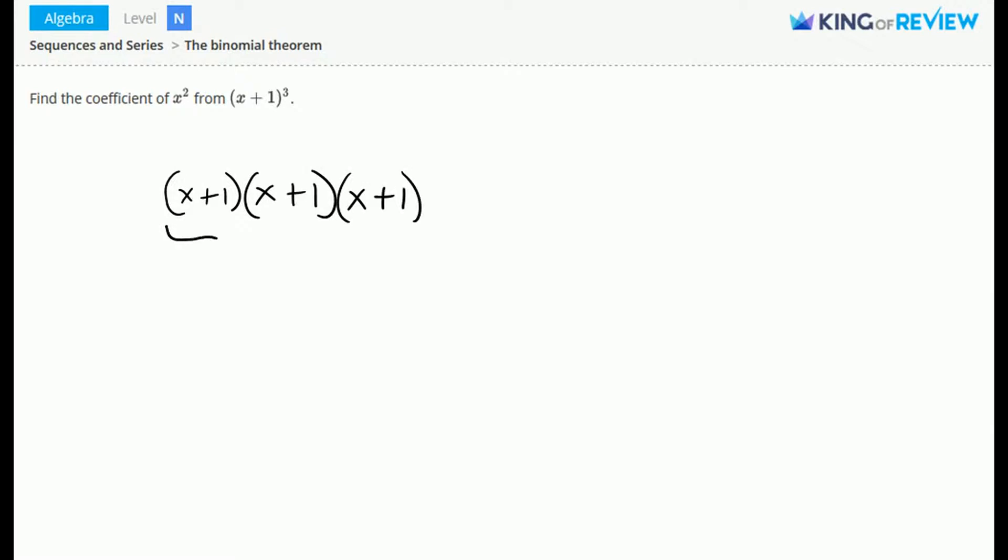Let's first multiply out this section here. If we multiply that out using FOIL, we get x² + 2x + 1.